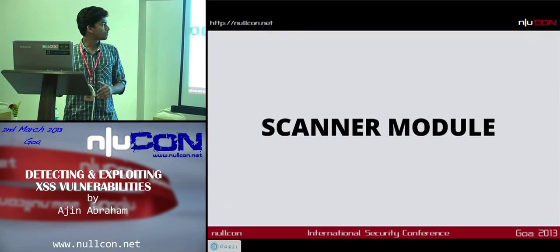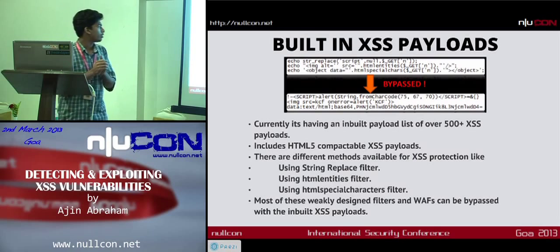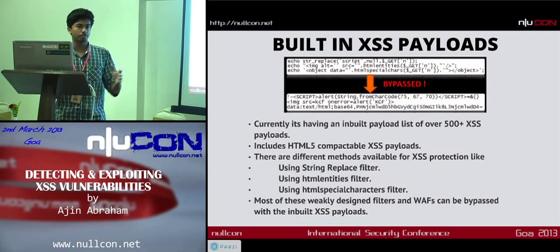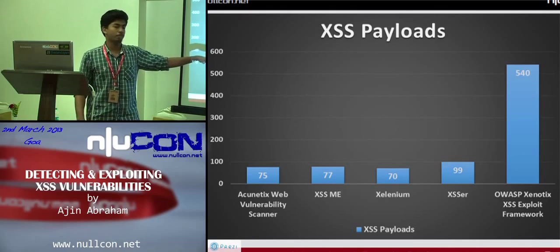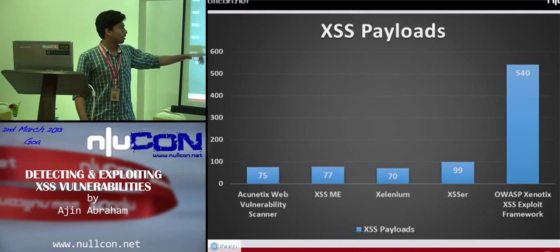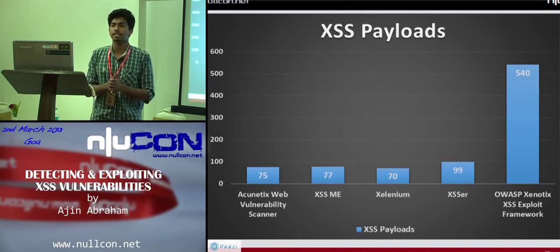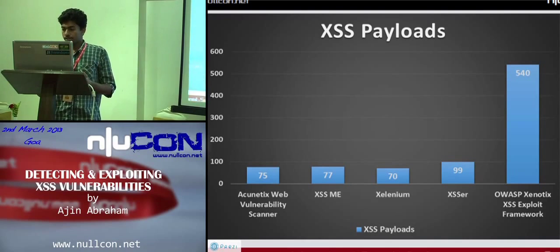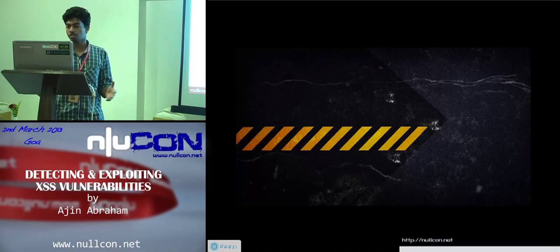The scanner module has a built-in payload list of over 500 XSS payloads and supports bypassing common XSS protection filters like string replace filters, HTML entities filters, and HTML special characters filters. Most weakly designed filters can be bypassed with this payload list. Looking at a payload comparison across different commercial and freely available tools, this tool has the second largest XSS payload count — the largest being IBM AppScan with around 700 artificially generated payloads. There is also a payload encoder supporting encoding into different formats to bypass firewalls and WAFs.